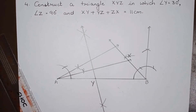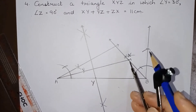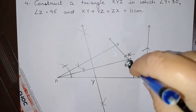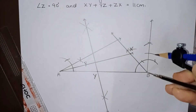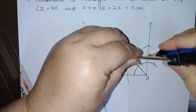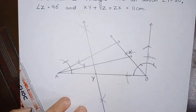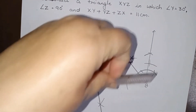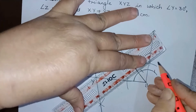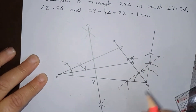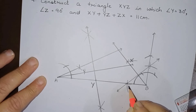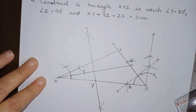In the same way, we will draw the perpendicular bisector of BX. Earlier we drew the perpendicular bisector of AX; now we draw the perpendicular bisector of BX in a similar way — open the compass to more than half of BX, draw one arc from B and one from X, then join them. So this is the perpendicular bisector of BX. Let this bisector intersect AB at Z — so this point is Z, the third vertex of triangle XYZ.